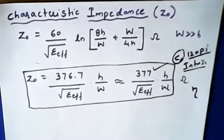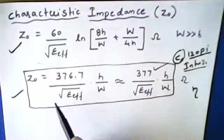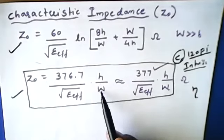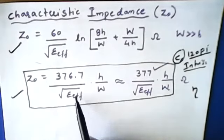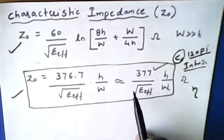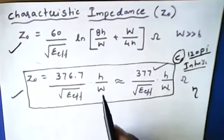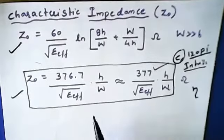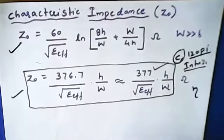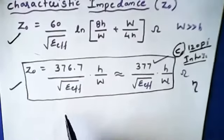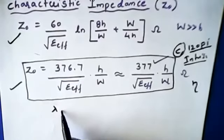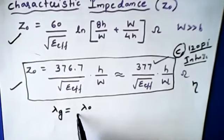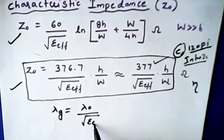So this is how we can calculate the characteristic impedance. There is one more expression — not strictly according to the syllabus but connected — which is the guide wavelength, which can be calculated using a related expression.